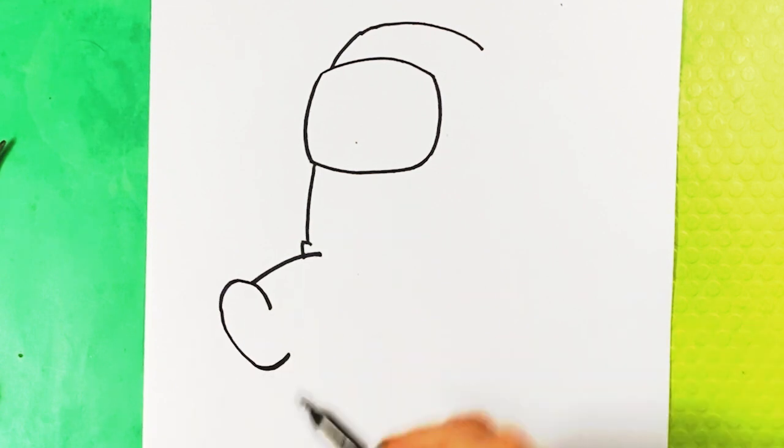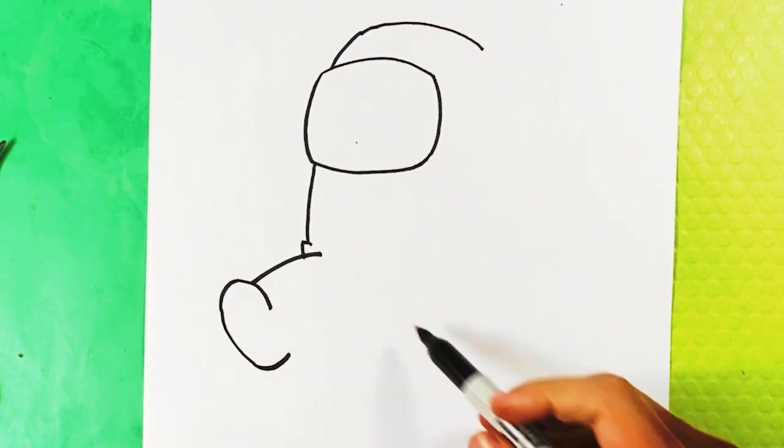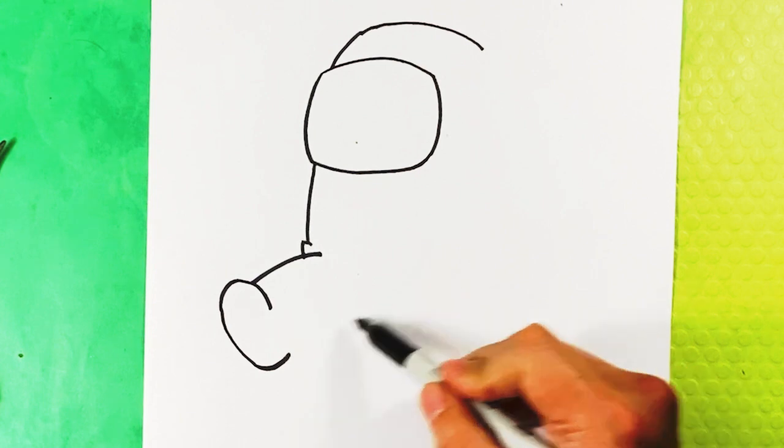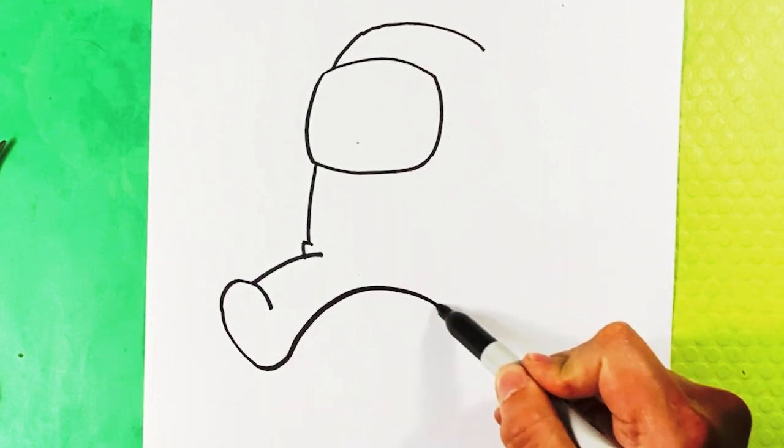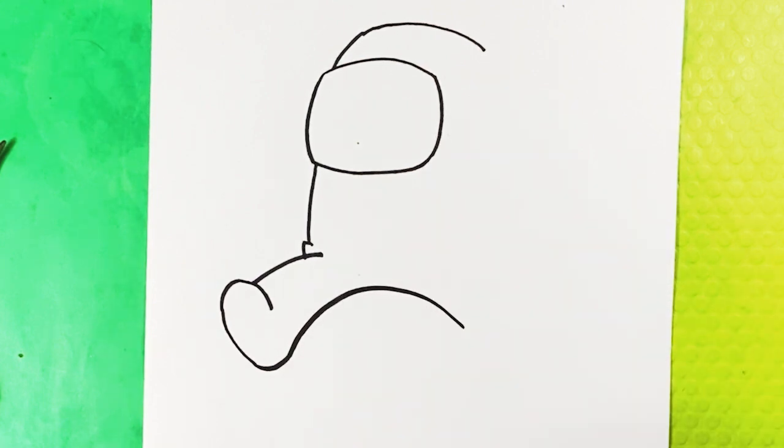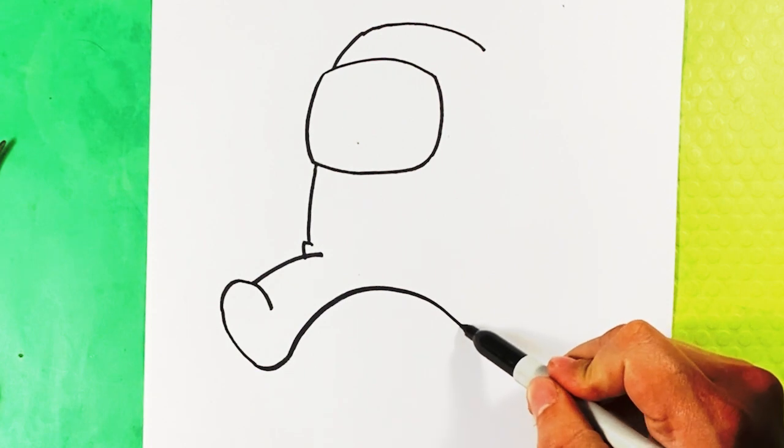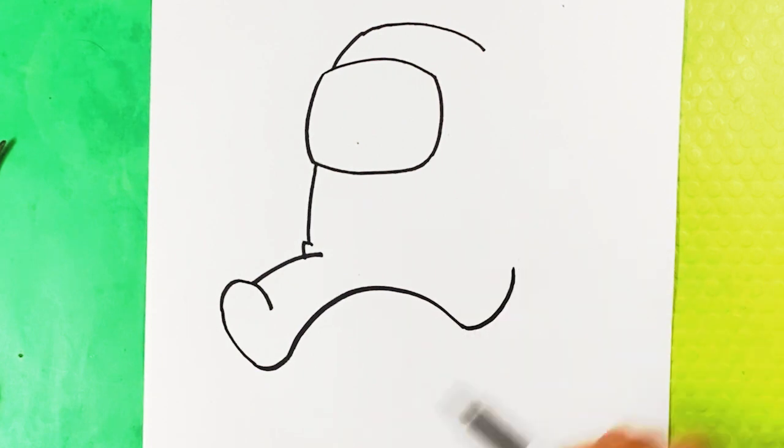I'm going to curve underneath, pull back over here. He's running, so I'm going to pull back and curve right here for the other leg—this is kind of for the knee.